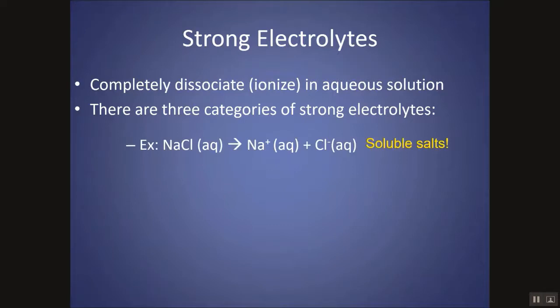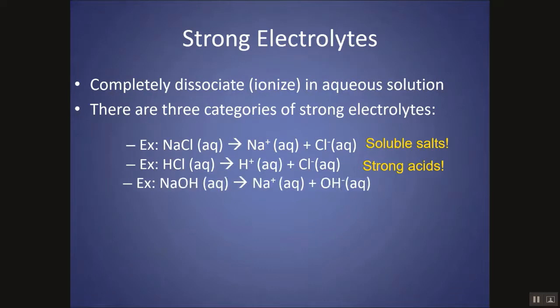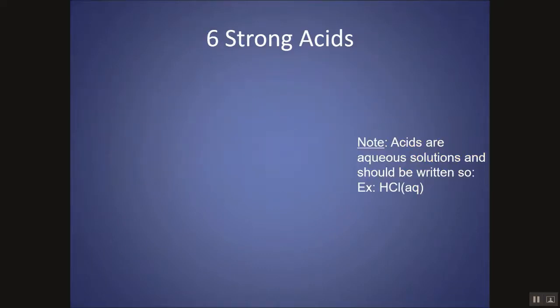There are three types of strong electrolytes: soluble salts or soluble ionic compounds (ionic compound is a salt), strong acids, and strong bases.